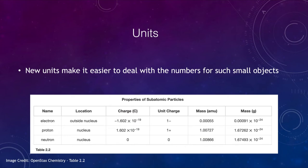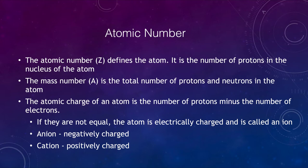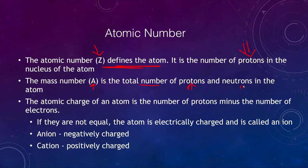Now we can look at what we mean by the atomic number. The atomic number is given by the letter Z, and this is what defines the atom — it is the number of protons in the nucleus that tells us what kind of atom it is. An atom with one proton is hydrogen; one with two is helium. The mass number, given by A, is the total number of protons and neutrons in the nucleus, which relates to the mass since protons and neutrons make up the vast majority of the mass — electrons have very small mass by comparison.